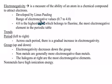When you move across the periodic table from left to right, you're going towards fluorine. Therefore, moving from left to right, electronegativity increases. However, when you're going down a group, you're going away from fluorine, and electronegativity decreases as you move down any group.